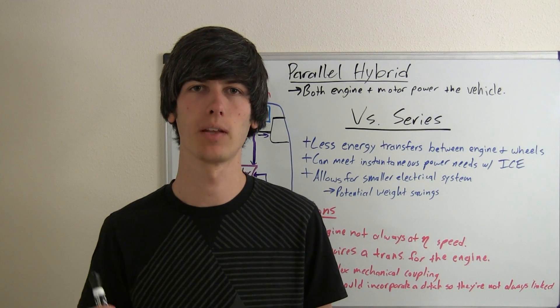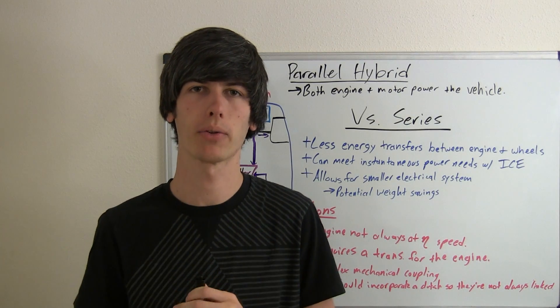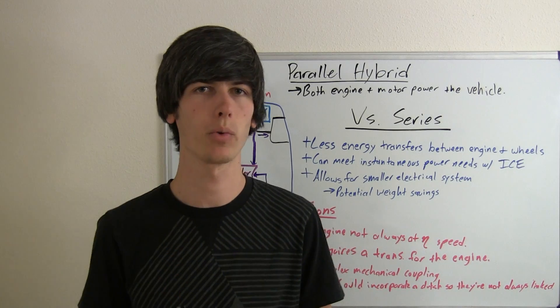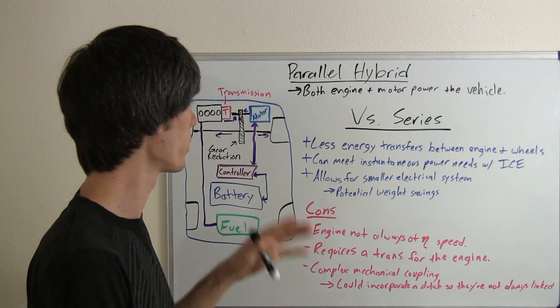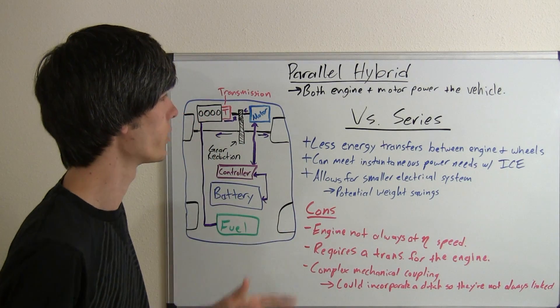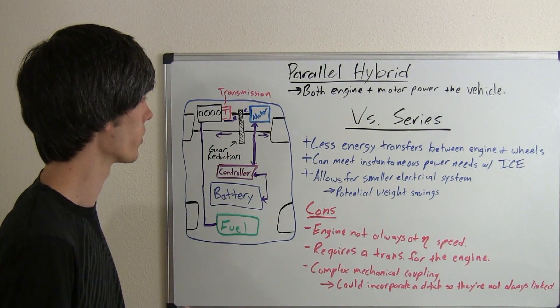A parallel hybrid simply means that both power sources you're using to power the car can directly power the wheels. In this example, we've got an internal combustion engine and an electric motor which are going to be powering our wheels.